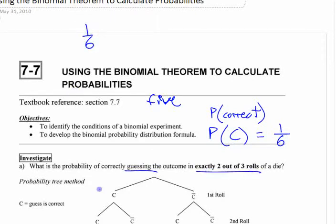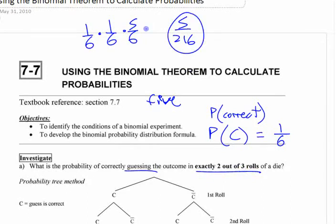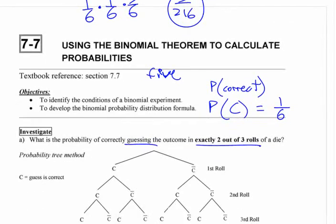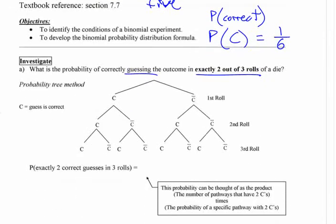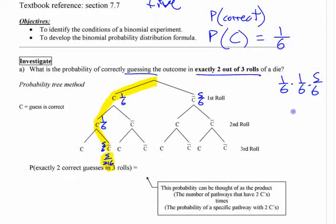I want exactly two out of three, so I could get the second one correct and then get the last one incorrect. That gives me the chance of that happening. But does that mean the chance of getting exactly two out of three rolls is just that one calculation? No — this is one particular pathway: getting the first two correct and then the incorrect one. Getting it correct is one in six, getting it not correct is five in six, and then correct again. Multiplying those three fractions gives five out of 216 for that one pathway.